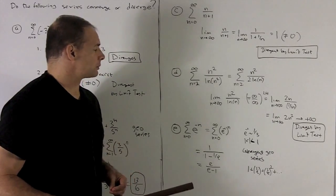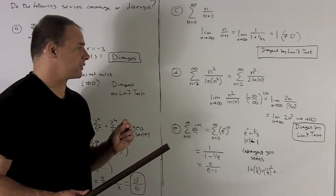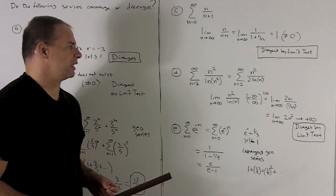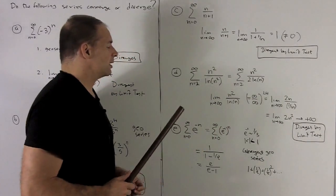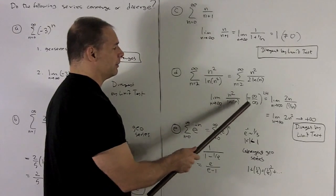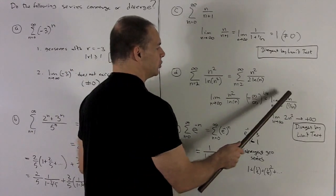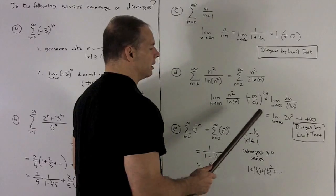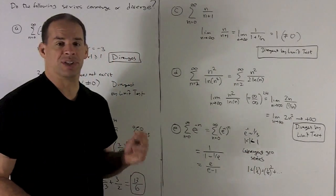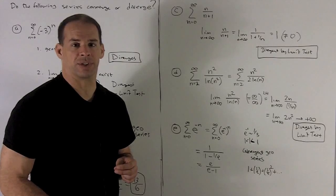Next, the sum from n equals 2 to infinity of n² / ln(n²). Using the log exponent rule, we can bring the exponent 2 out front, simplifying to n² / (2·ln(n)). Applying the limit test: the limit of n² / ln(n) gives infinity over infinity, so we apply L'Hôpital's rule. The derivative of n² is 2n, and the derivative of ln(n) is 1/n, giving 2n / (1/n) = 2n². That goes to infinity, so the limit is not 0 — the series diverges by the limit test.